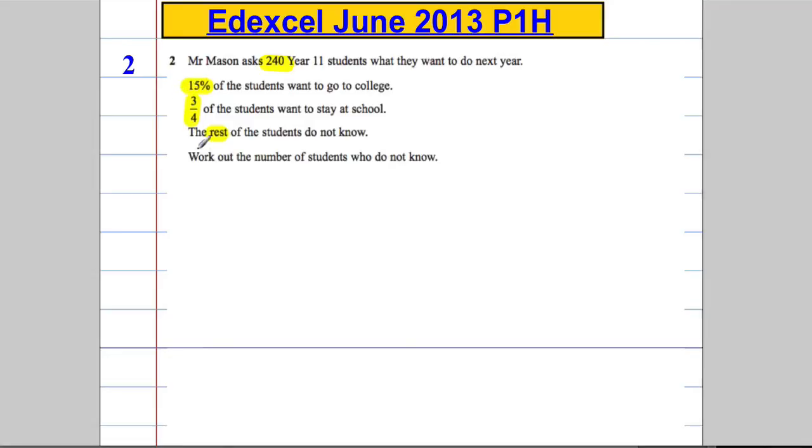If 15% of the students go to college and three quarters want to stay at home, well three quarters I know is 75%. The rest of the students do not know. So what's left? 15% and 75%.